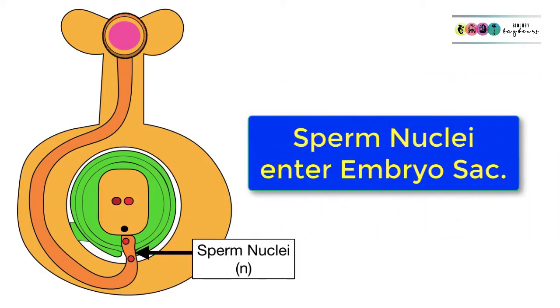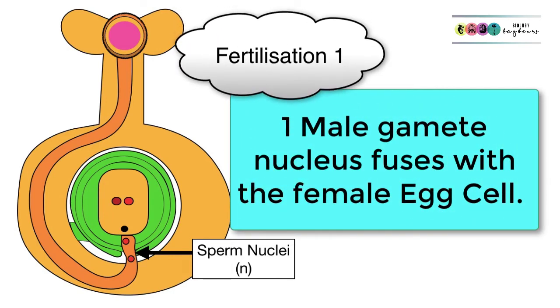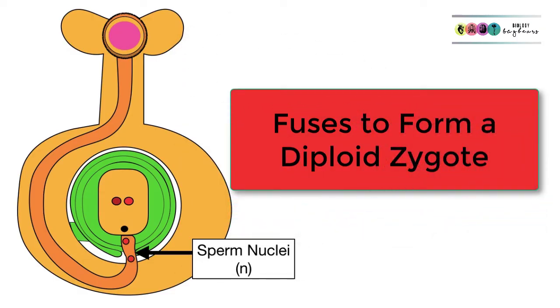Now the first fertilisation event can happen. Those sperm nuclei enter the embryo sac and the first fertilisation event takes place. One of the sperm nuclei fuses with the female egg cell to produce a diploid zygote, and this is going to become the embryo plant.